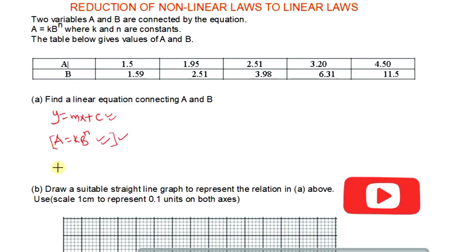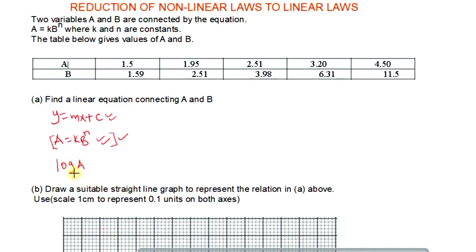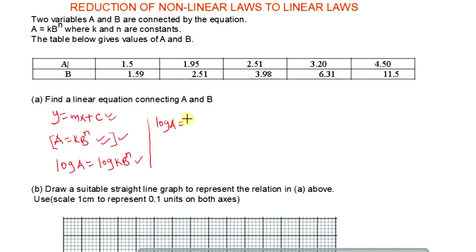We introduce logarithm to base 10 — that is, common logarithms — on both sides. So we write logarithm of a on the left-hand side. The base 10 is silent here; even if you don't indicate it, it is still logarithm to base 10. On the right-hand side, we also introduce logarithm to base 10, giving logarithm of k times b raised to n. Applying the laws of logarithm, we get logarithm of a equals logarithm of k plus logarithm of b raised to n. Since k is multiplied by b^n, we use the addition law.